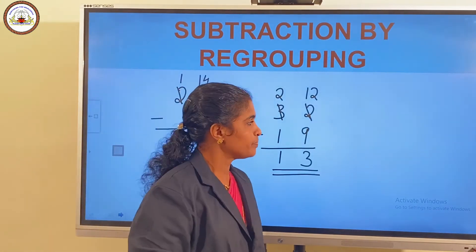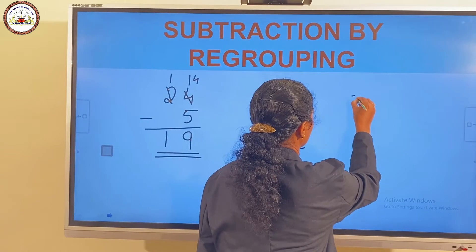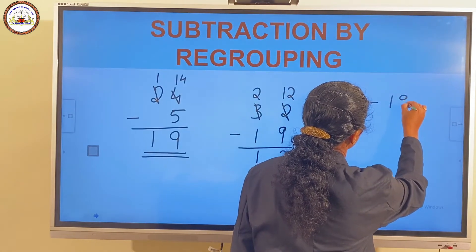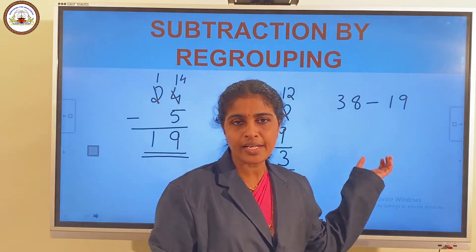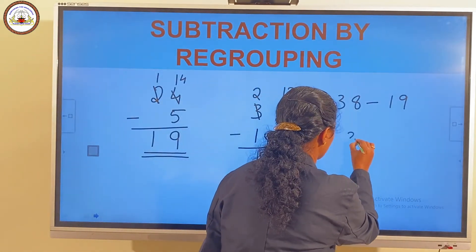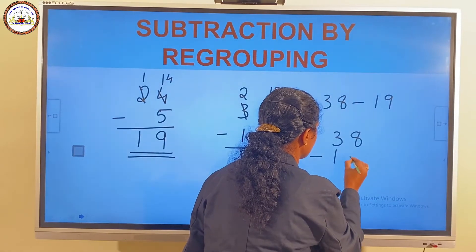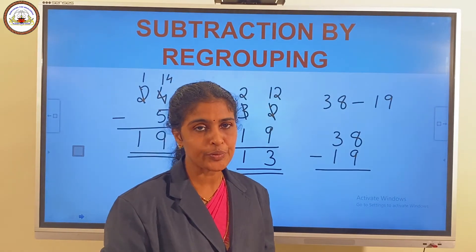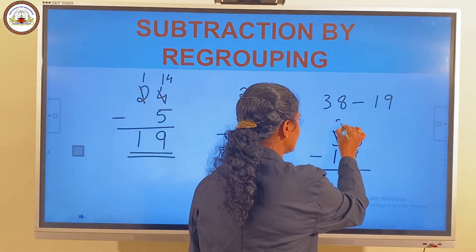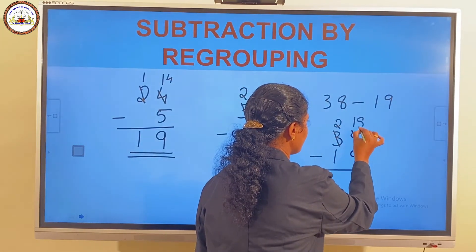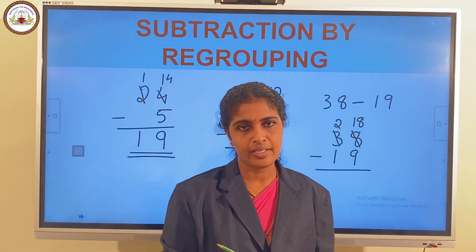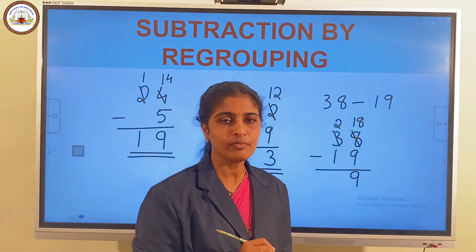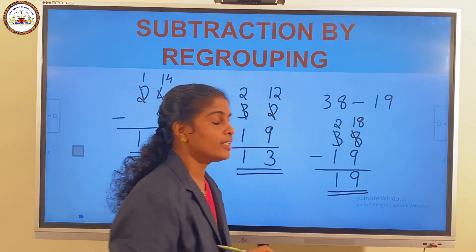Consider another example: 38 minus 19. First we arrange the numbers in columns. 8 minus 9 is not possible, so we regroup. Now we have 2 tens and 18 ones. 18 minus 9 is 9. And 2 minus 1 is 1. So the answer is 19.